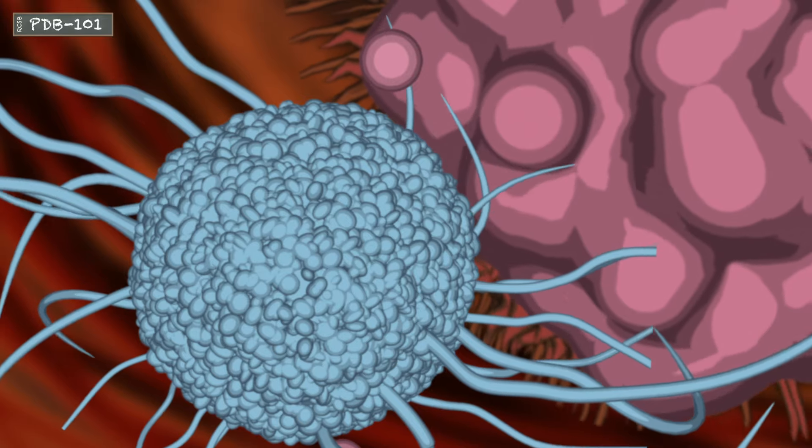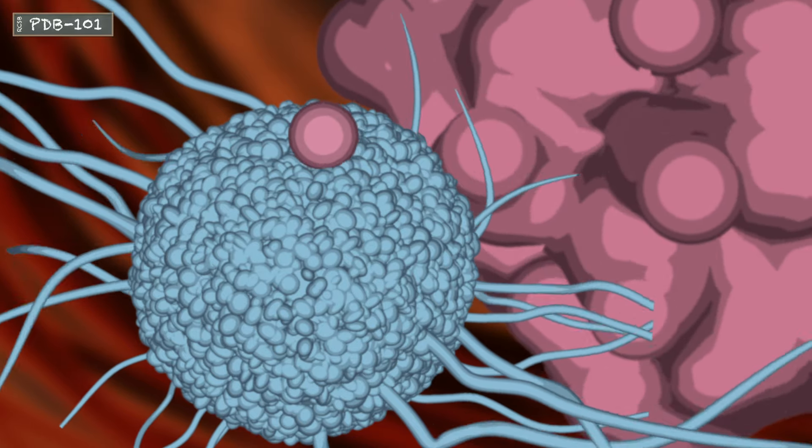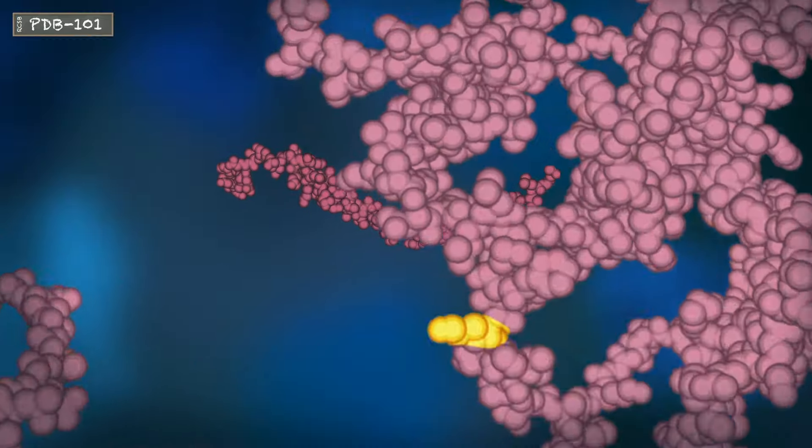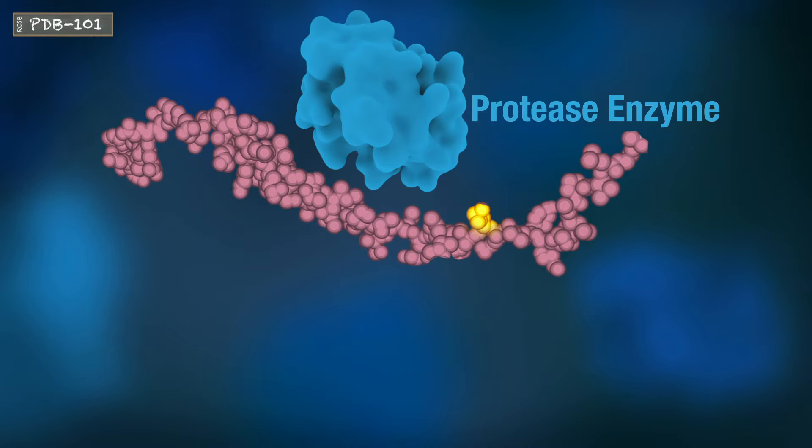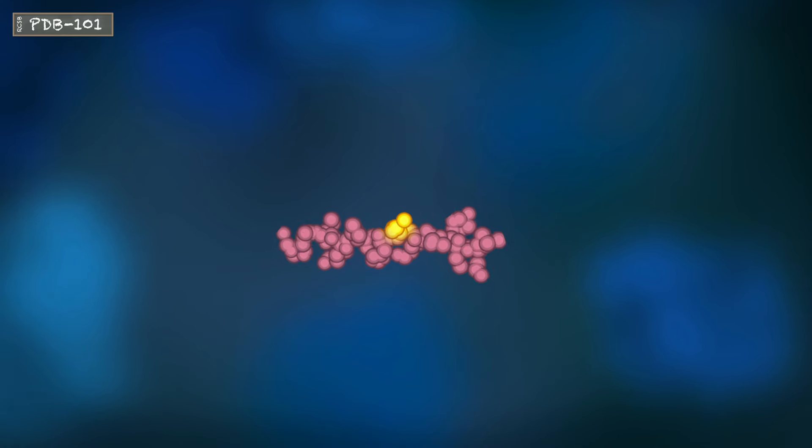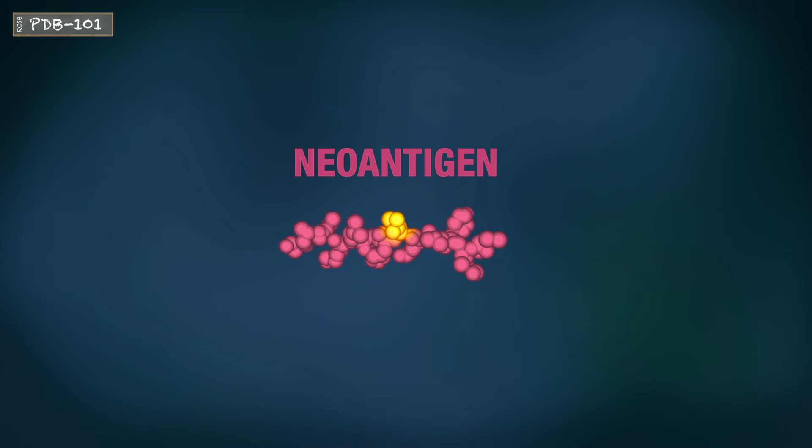What you see here is a dendritic cell engulfing the remains of a dead cancer cell. The proteins from cancerous cells contain many mutations. The dendritic cell then processes these mutated proteins producing short sequences of amino acids called antigens or neoantigens if they come from cancer cells.